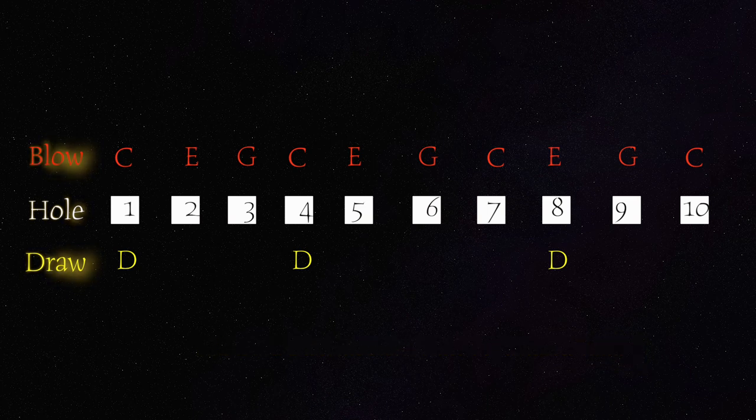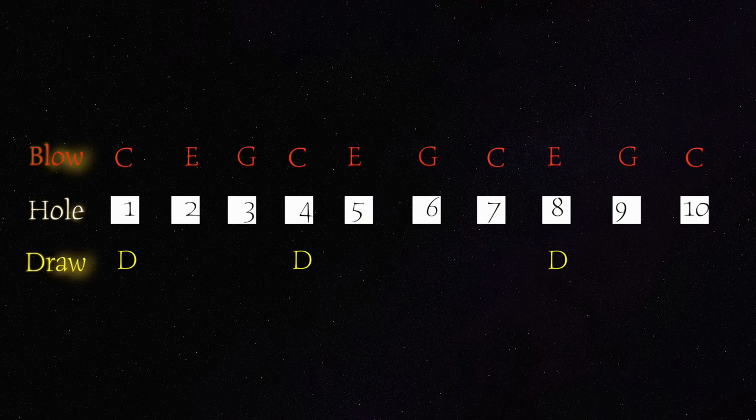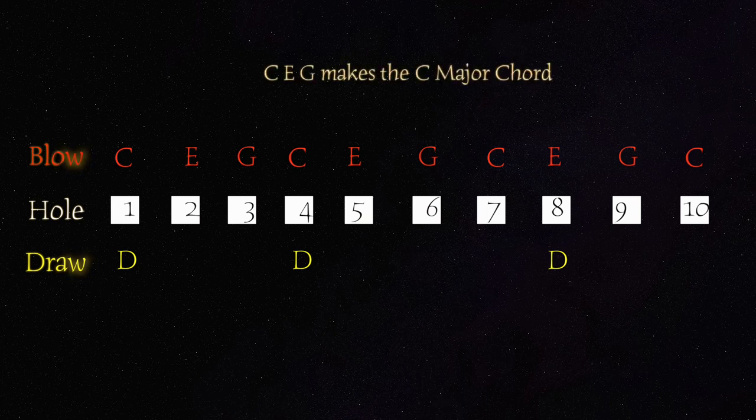That C, E, G is known as a chord. 3 notes, 3 holes is considered as a chord. So C, E, G is a C major chord. So you can play that chord in a C harmonica.